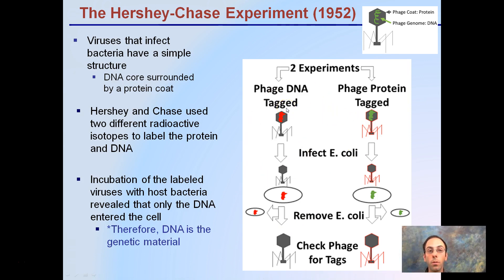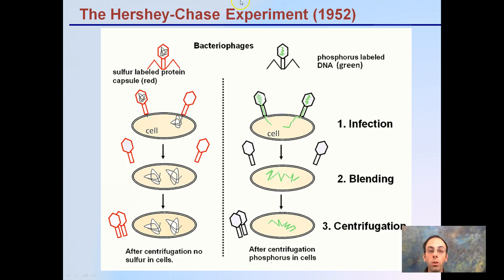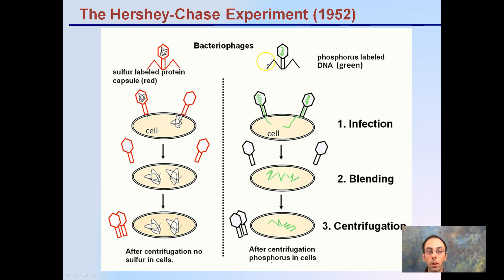Here is a more detailed look at the Hershey-Chase experiment of 1952. Two bacteriophages were used. In one, the protein capsule was sulfur-labeled on the outside for tracking purposes. In the other, the DNA inside was labeled green. Both were allowed to infect the cell and reproduce.